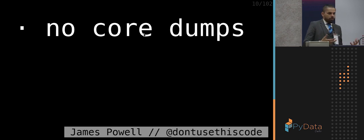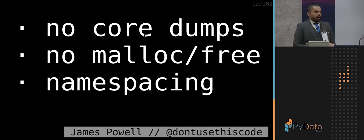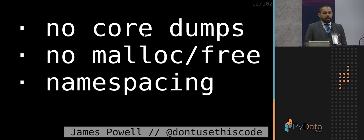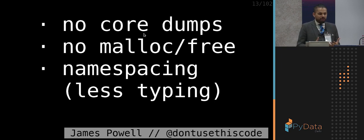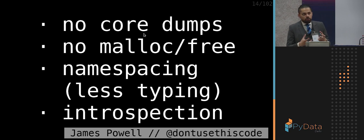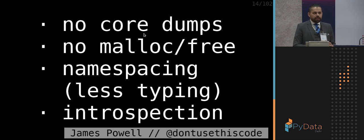One reason to choose Python over the original C++ model code is we don't have to deal with core dumps, malloc, and free. C in many ways is a very primitive language — without modules, without namespacing — and so Python gives us a much easier, friendlier way to build APIs. Also, when you're working with Python code it's very easy to work in an iterative, introspective mode, which is very difficult to do in C or C++.